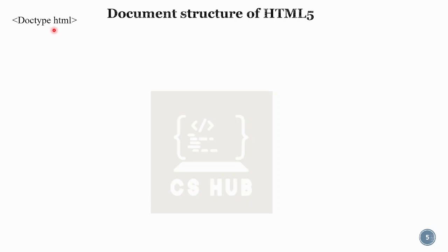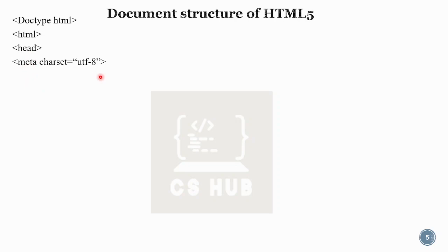In HTML, there is a lot of metadata. The document starts with the DOCTYPE declaration, then the HTML root tag. Inside the head, there is a meta charset equal to UTF-8 for encoding, followed by the title tag, and then the head closes.